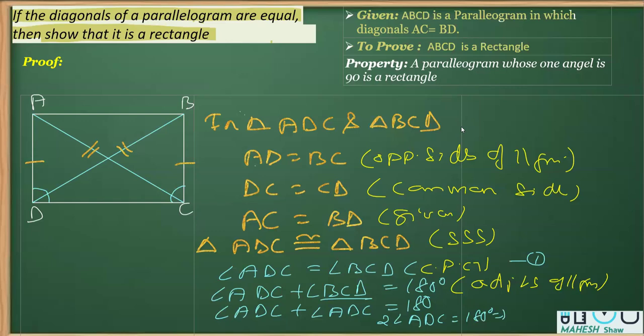And therefore, we can say that this angle, that is ADC, is equal to 180 over 2, that is 90 degrees. So once we prove this angle is 90 degrees, what we have proved is that angle ADC is equal to 90 degrees.